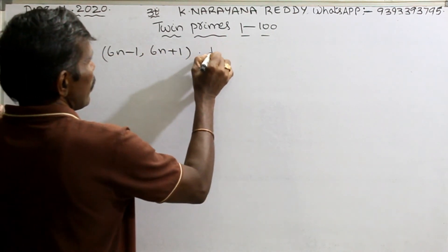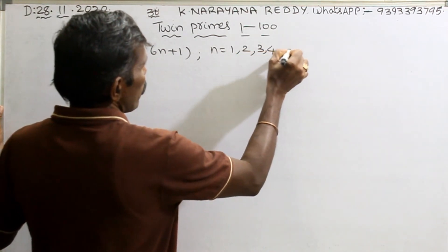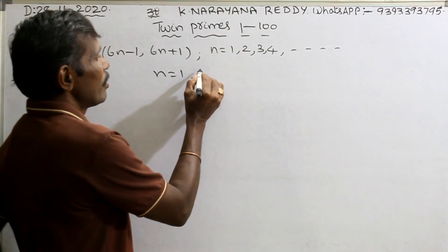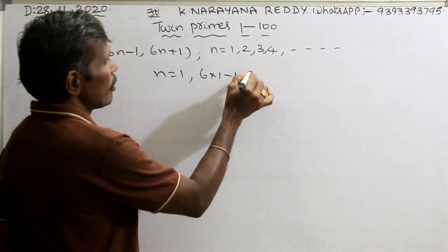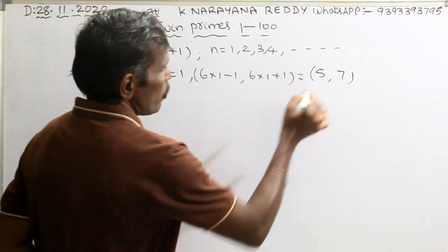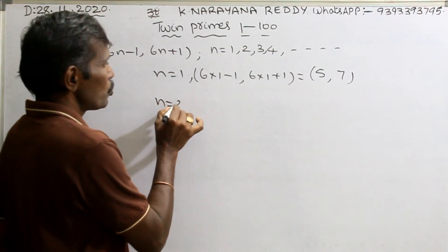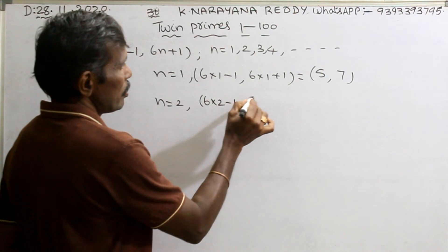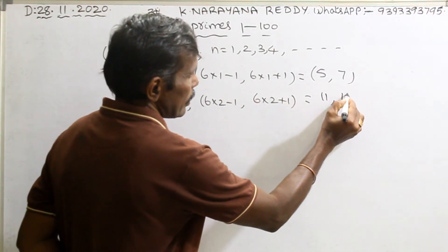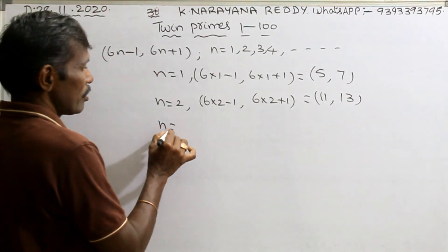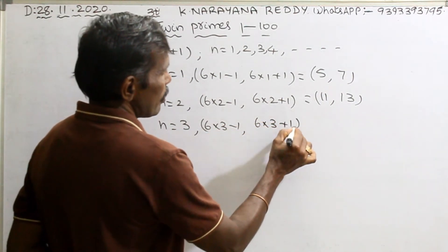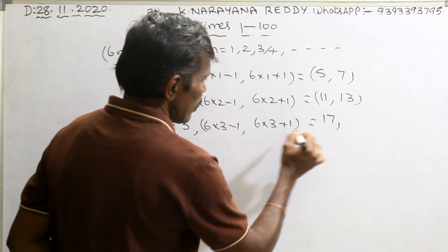For n equals 1, 2, 3, 4, etc. Take n equals 1: 6×1−1 = 5, 6×1+1 = 7. This is one pair. Take n equals 2: 6×2−1 = 11, 6×2+1 = 13. Another pair. Take n equals 3: 6×3−1 = 17, 6×3+1 = 19. Notice that we are adding 6 to get each subsequent number: 5+6=11, 11+6=17; and 7+6=13, 13+6=19.